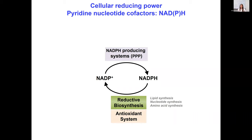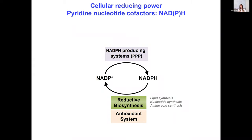Reductive biosynthesis consumes a lot of NADPH. For example, in order to generate one lipid molecule such as palmitate, you need about 14 molecules of NADPH. NADPH is also a very important factor for antioxidant systems such as glutathione. It can be regenerated from NADP through NADPH-producing systems such as the pentose phosphate pathway. Given that the PI3 kinase AKT pathway and growth factor signaling stimulate biosynthetic processes and anabolic metabolism, we asked whether this pathway can also regulate any of the NADP and NADPH cofactors.